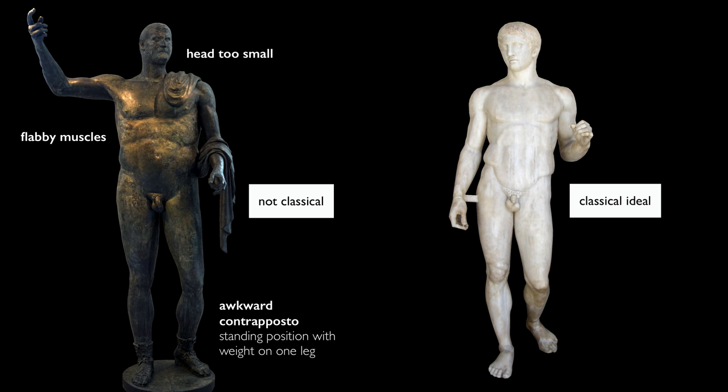The muscles in the torso look flabby — very different from what we associate with the classical ideal, where figures would be idealized, youthful, and athletic. What I'm noticing about his contrapposto is that although I see his left knee bent, I don't see the associated shifting in his hips. There's not that sense of natural movement and flow to the body that we would expect in contrapposto.